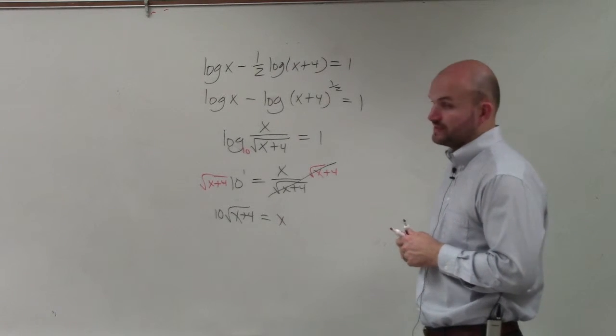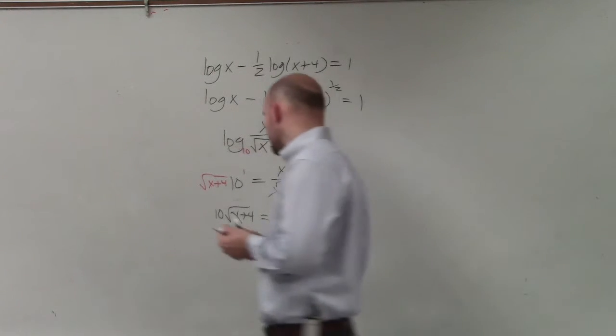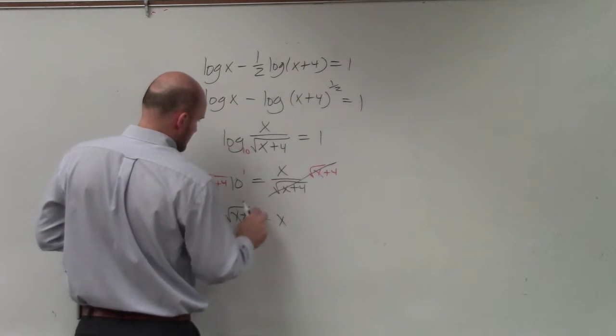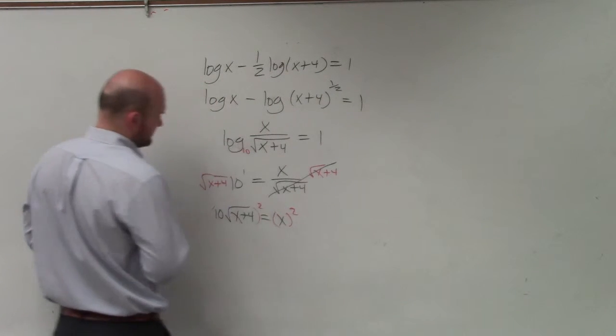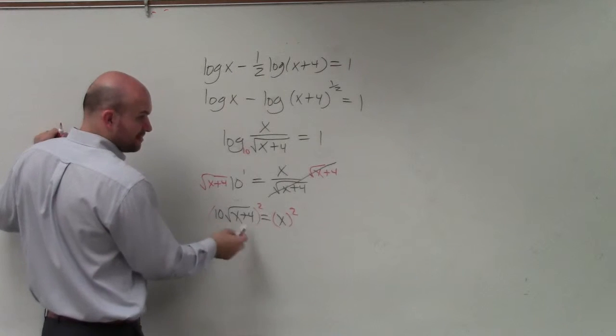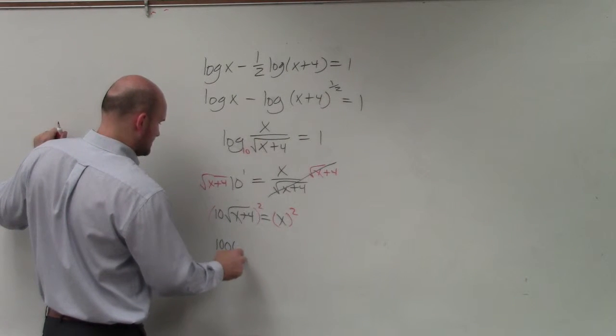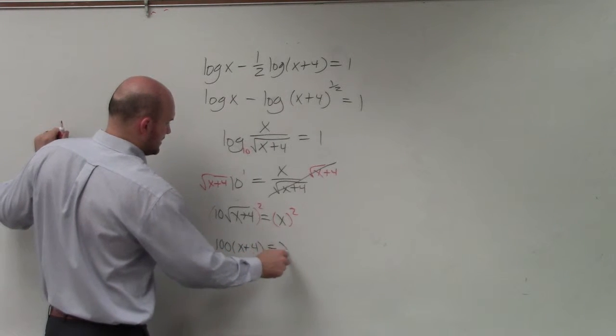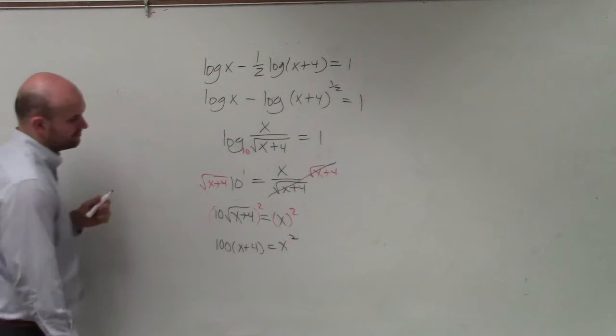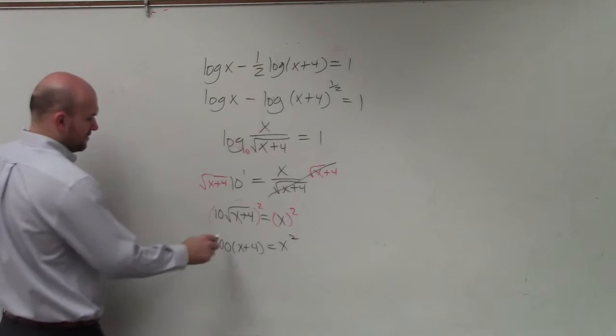Then I'd get rid of the square root by squaring both sides. So remember, you square both of these, so that's going to be 100 times x plus 4 equals x squared. Then I would distribute.